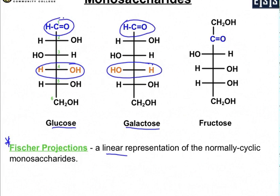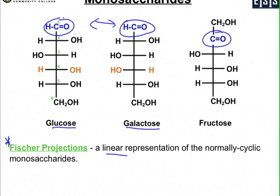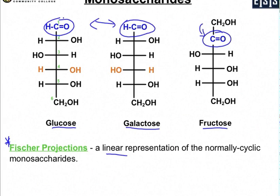For the other important sugar, fructose, the difference is with the C double-bonded O — the carbonyl group. On glucose and galactose, the carbonyl is on the top, at the beginning of the molecule. However, in fructose, it's on the second carbon where the double-bonded O is. That's how you can identify fructose: by where that carbonyl group is located.